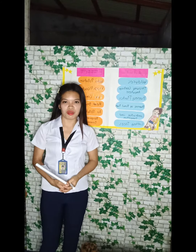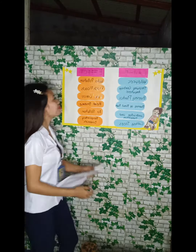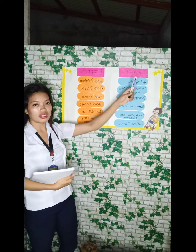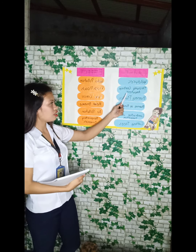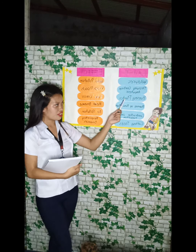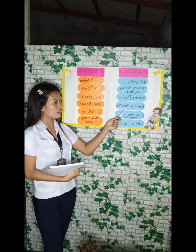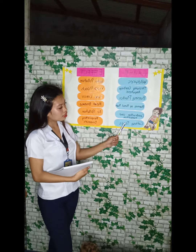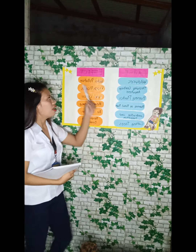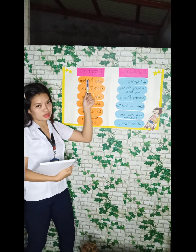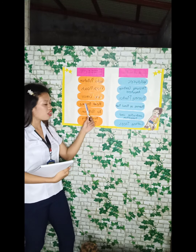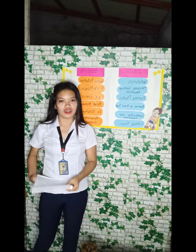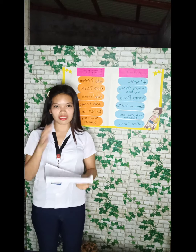Thank you, pupils, for your activity — you did very well, good job! The causes of pollution are: number one, wildfires; second, throwing garbage anywhere; third, burning plastics; fourth, burning of fossil fuels; fifth, construction and demolition; and the last one is cutting of trees. The effects include water pollution, flash floods, lung cancer, heart disease, air pollution, and respiratory disease. Your answers are all correct — please give yourselves a round of applause.